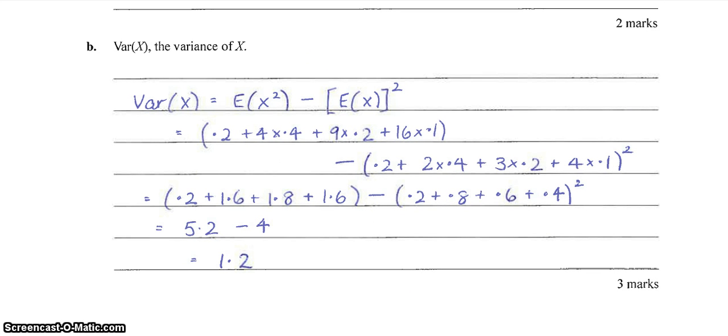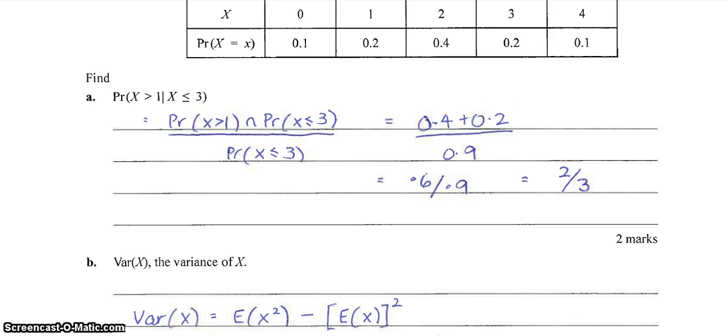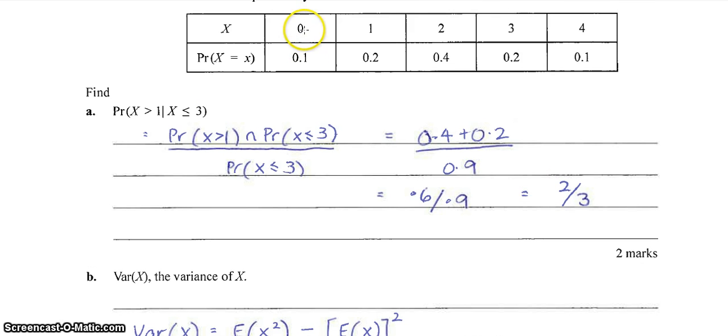Part b, find the variance. This is a bit of a long question to work out, but it's still following the simple formula. So the variance of x is given by the expectation of x squared minus the expectation of x all squared. So that gives us, just scrolling back up here, so the first one, the expectation of x squared, that's given by that squared times that, plus that squared times that, plus that squared times that, and so on.